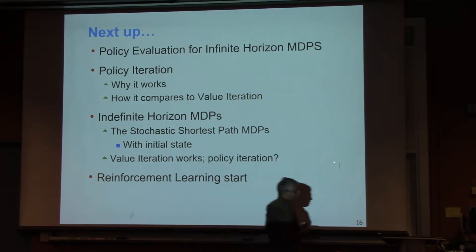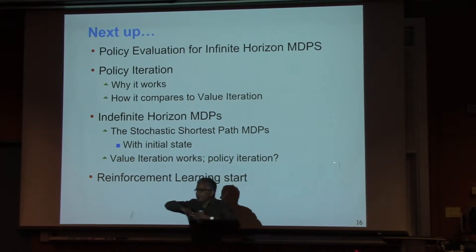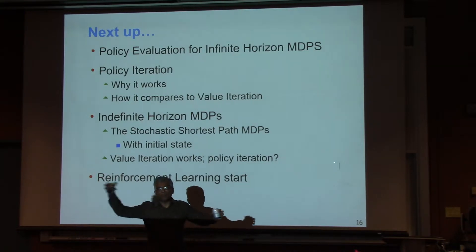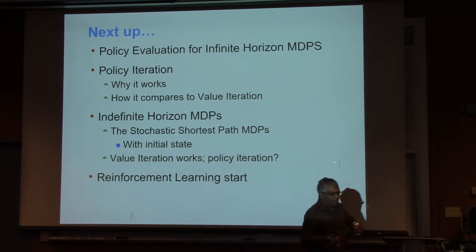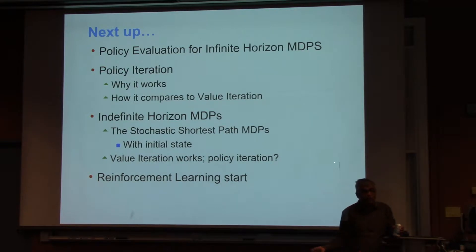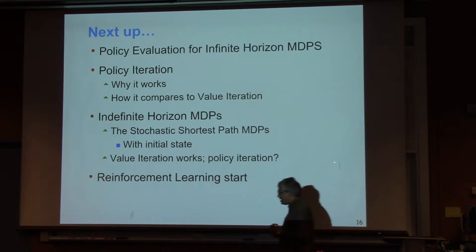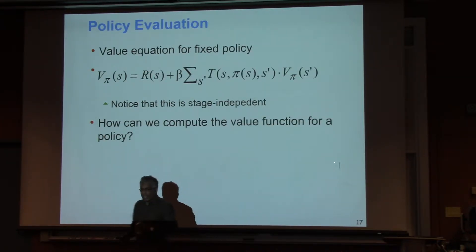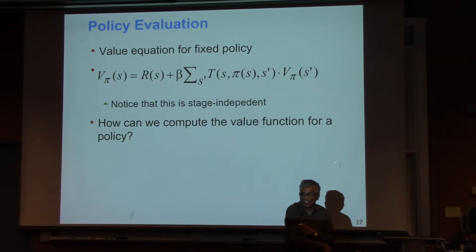So here is an interesting question. It looks as if we are wasting our time in some way. We are searching in the space of infinite number of value functions, trying to find the optimal value function. When really, what you needed to do is to find the optimal policy, which is in a discrete space of only A power S. So why are you searching in the value function? Why not search directly in the policy?